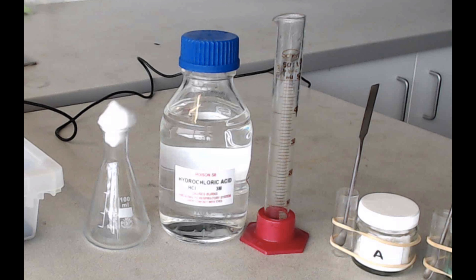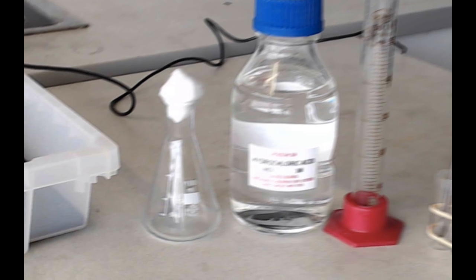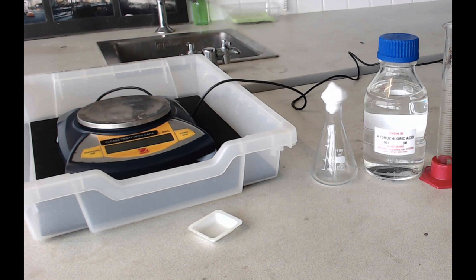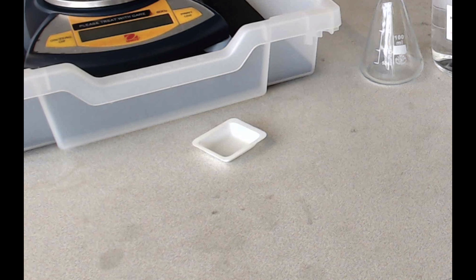You're going to need some hydrochloric acid and a 50 ml measuring cylinder to dispense that with. You're going to need a conical flask that has got a cotton wool bud in the top. You'll need a balance and a small plastic weighing boat to weigh your solids out in.